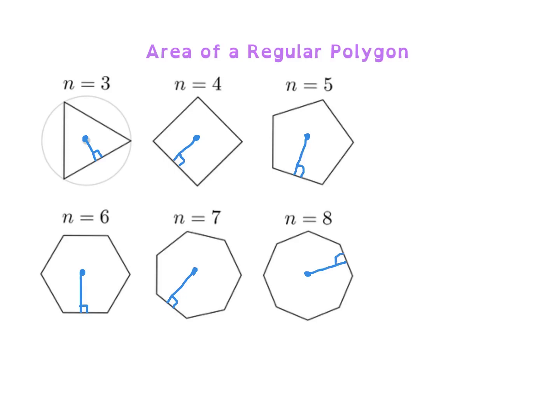If you notice, it doesn't matter which side you go to, since a regular polygon is going to be equilateral and equiangular. So when you're looking at the central angle of the triangle, what I was talking about would be this triangle — creating a triangle from the center and then to the sides of the polygon.